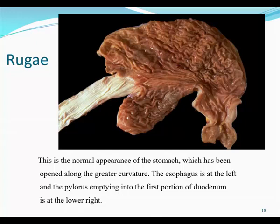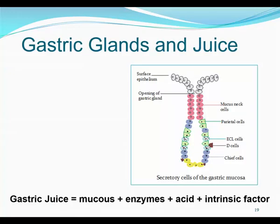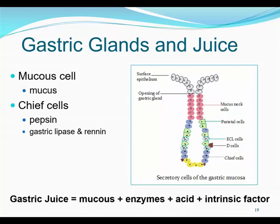The inner lining of the stomach is folded into mucosal ridges called rugae, which allows for expansion. Gastric glands produce gastric juice — a mix of several things. Mucus is secreted by mucus cells. Chief cells secrete pepsin, gastric lipase, and renin; pepsin digests proteins into peptides and amino acids. Parietal cells secrete HCl, or hydrochloric acid, which breaks down food and denatures proteins — the stomach pH is around 1 or 2. Parietal cells also secrete intrinsic factor, required for vitamin B12 absorption; it binds B12 in the stomach and allows it to be absorbed later in the colon.